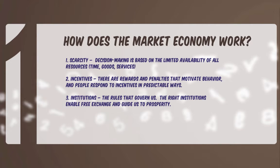And finally, institutions. As discussed in the previous video, institutions are the rules that govern us. Both the laws and contracts for exchange to take place must be defined and clear for there to be an environment of certainty for people to engage in trade. A buyer must know what he is getting from a seller with as few surprises as possible, and the right institutions ensure this type of exchange.